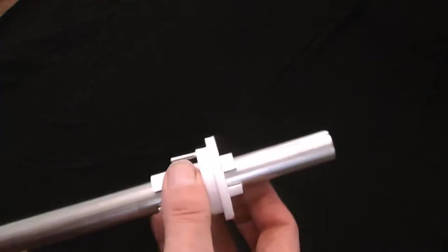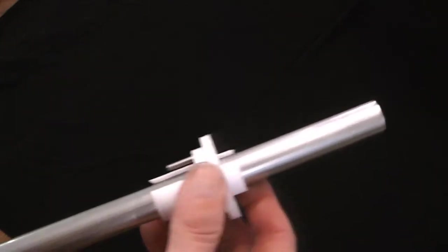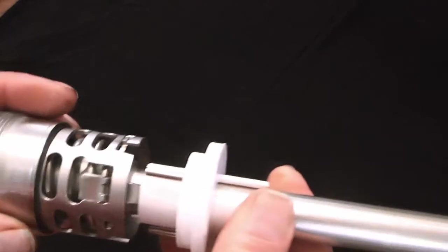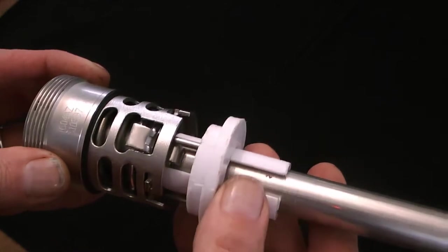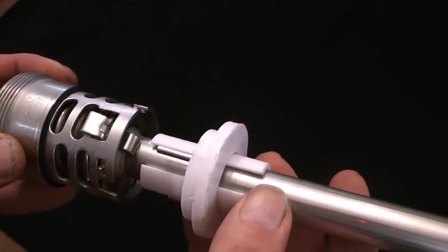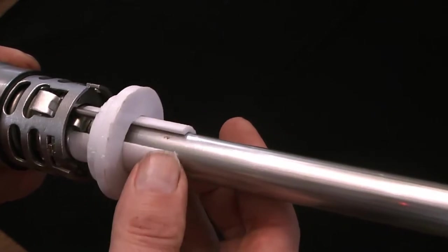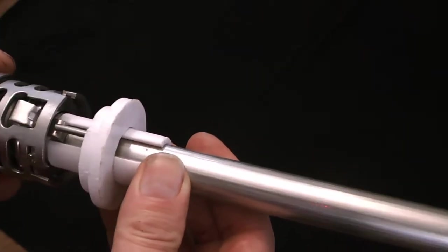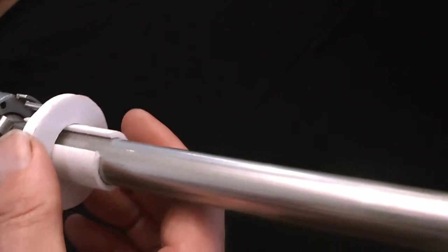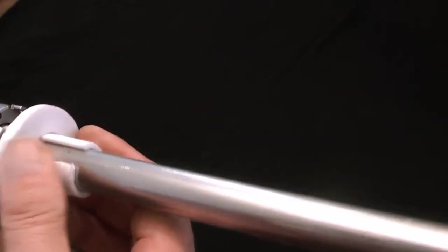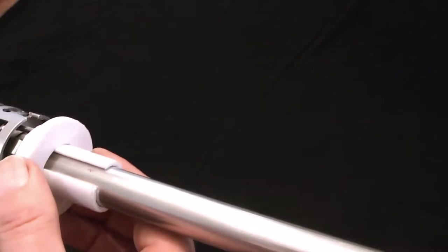You basically take your guide and the mandrel and place that over the shaft. Now what we need to do is align the split in the sleeve with the keg retention key.